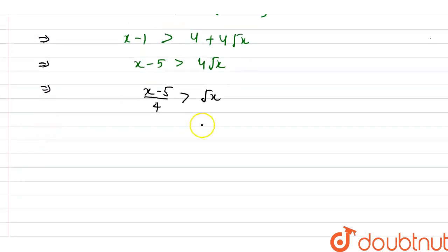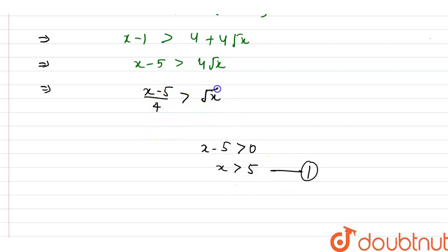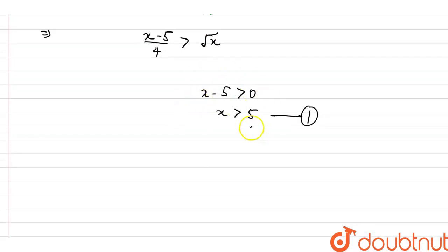Since root x always gives a positive value, the left side must also be positive. So x minus 5 must be greater than zero, meaning x must be greater than 5. This is our first condition.